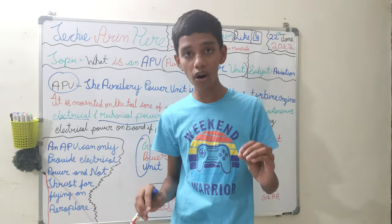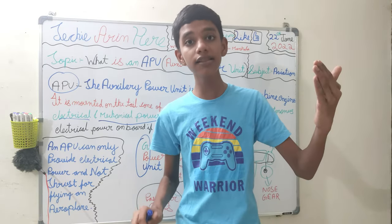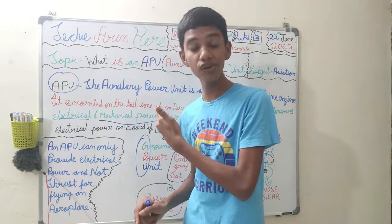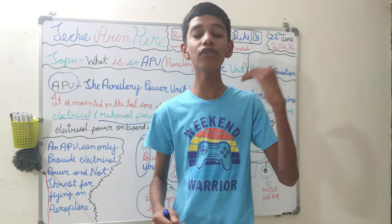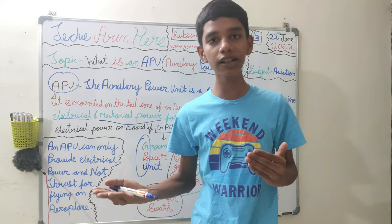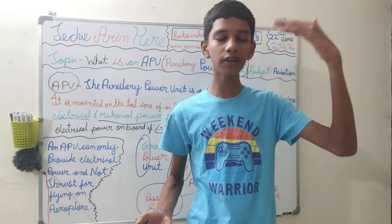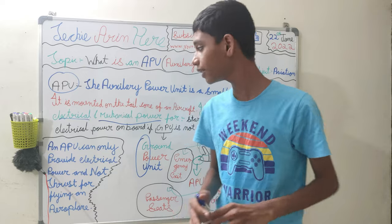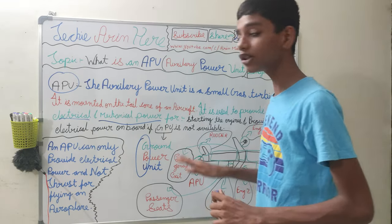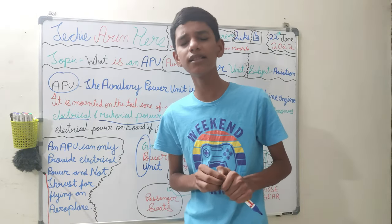If both engines go off while in the air, the APU can be used to power the airplane as long as fuel is available. If fuel is not available, then a ram air turbine is used — I will cover that topic in another video. So the APU is mainly used for providing electrical power and starting the main engines.